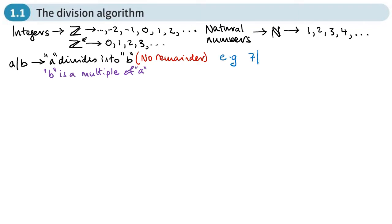So for example, seven divides into 28 exactly — there's no remainder. 28 is 4 times 7, so b is a multiple of a. Another way of thinking about it is that a is a factor of b — 7 is a factor of 28. These aren't the strict definitions, but they help build intuition.